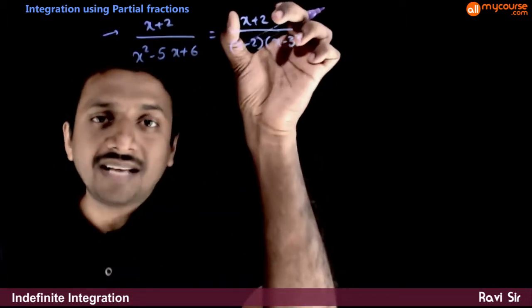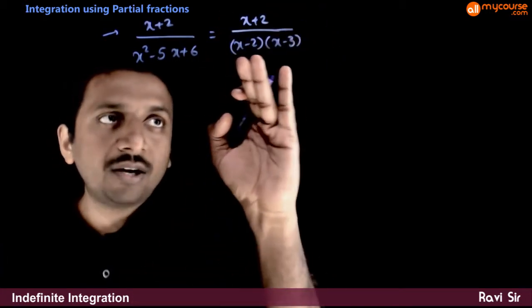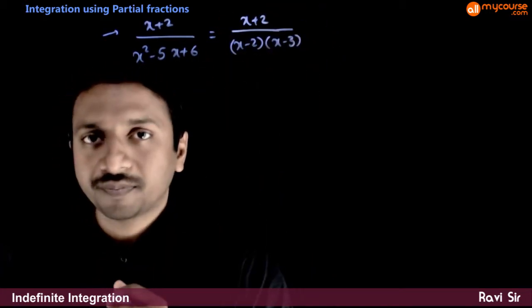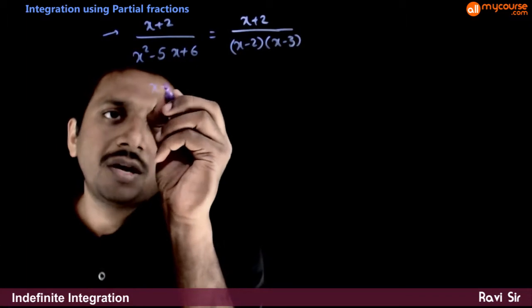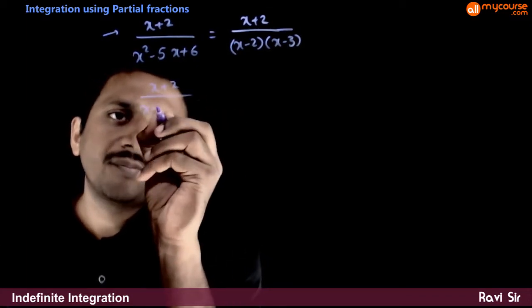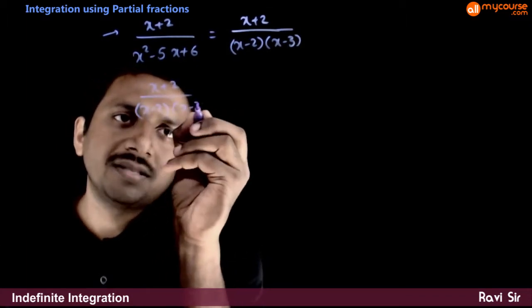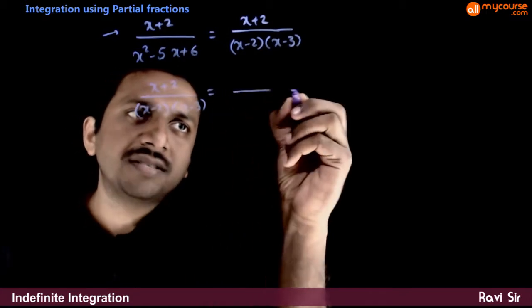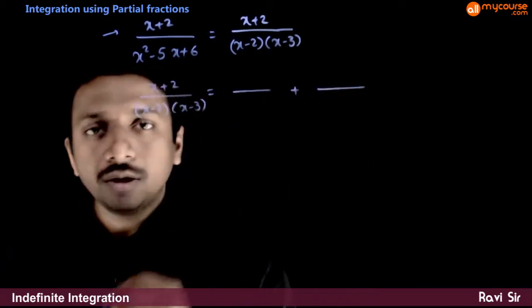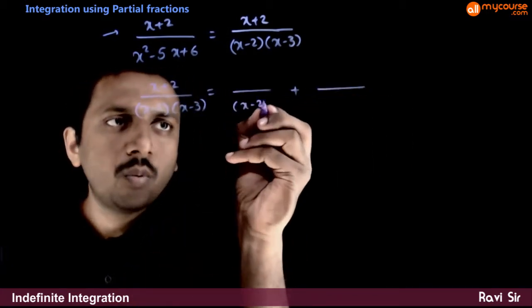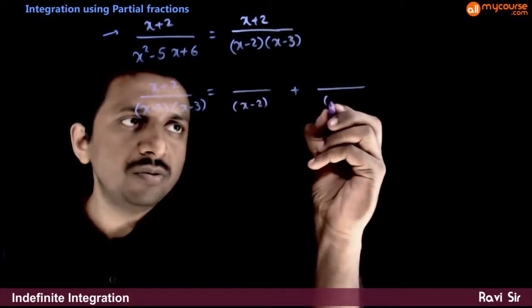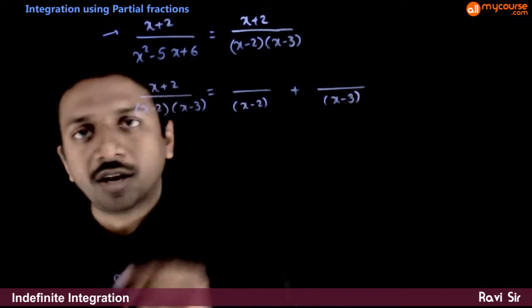Now, this fraction has x plus 2 in the numerator and two linear factors in the denominator. What we try to do is x minus 2 into x minus 3 - we will try to split this into two partial fractions, one of which has the denominator x minus 2 and the other has the denominator x minus 3.